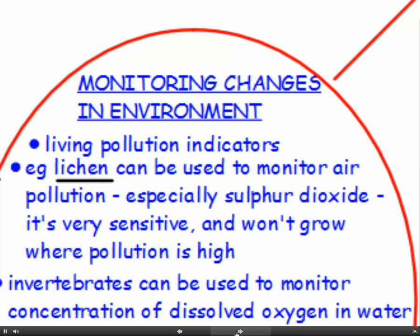How do we monitor changes in the environment? We can use living pollution indicators — we look at different organisms to see if they're living in a habitat. Some organisms are very sensitive to pollution, so if we find these sensitive organisms in a habitat, that suggests very low levels of pollution. An example is lichen, the fluffy stuff that grows on tree bark. Lichen can be used to monitor air pollution, especially sulfur dioxide — it's very sensitive and won't grow where pollution levels are very high.